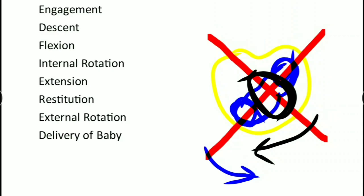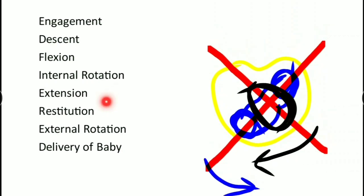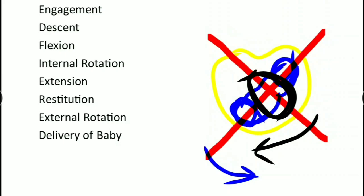If the delivered head has twisted inside the pelvis one-eighth of the circle in one direction, after delivery of the head outside the body it has to untwist in the opposite direction - the opposite one-eighth of the circle. That untwisting occurring outside the body is known as restitution.